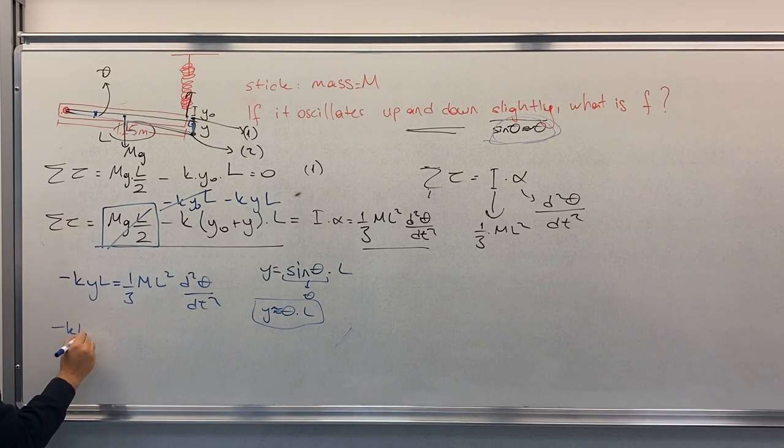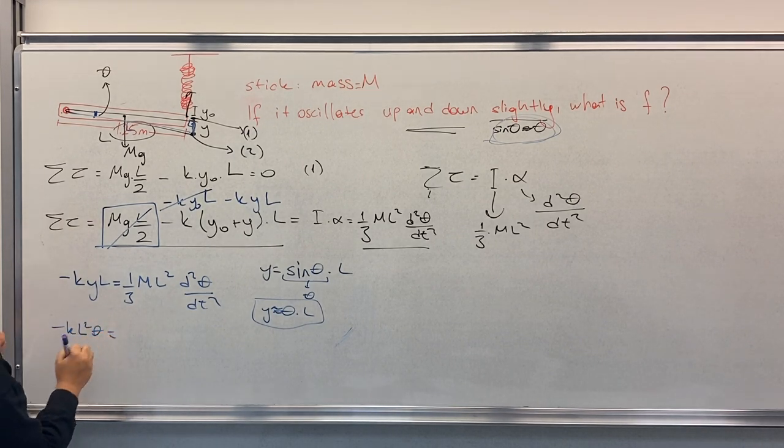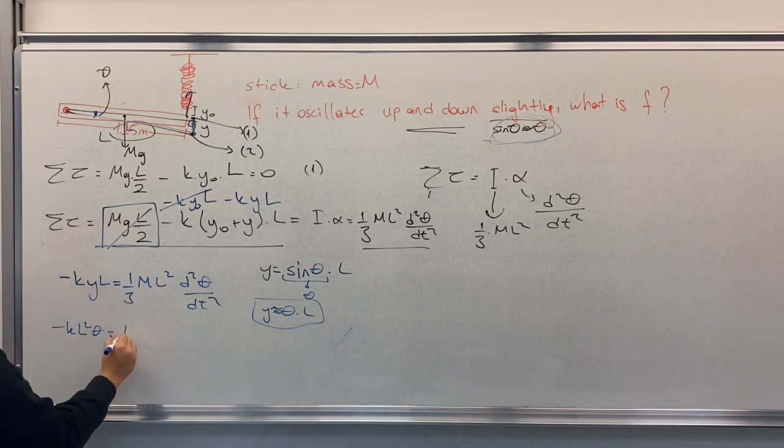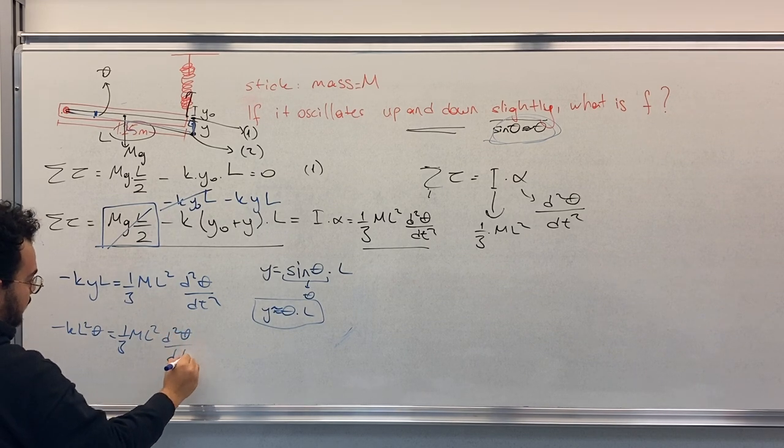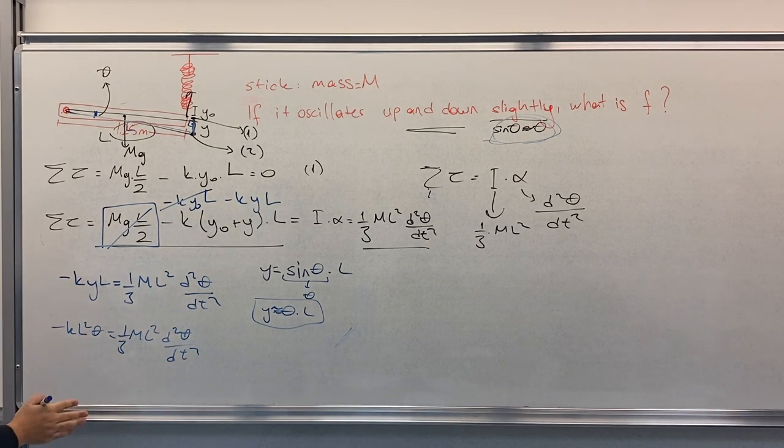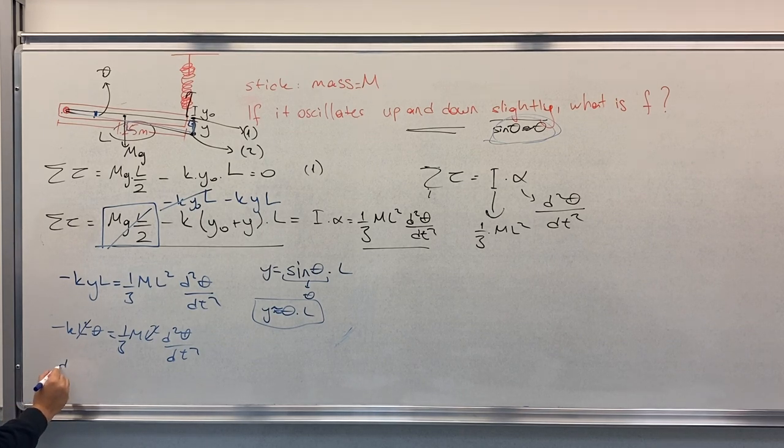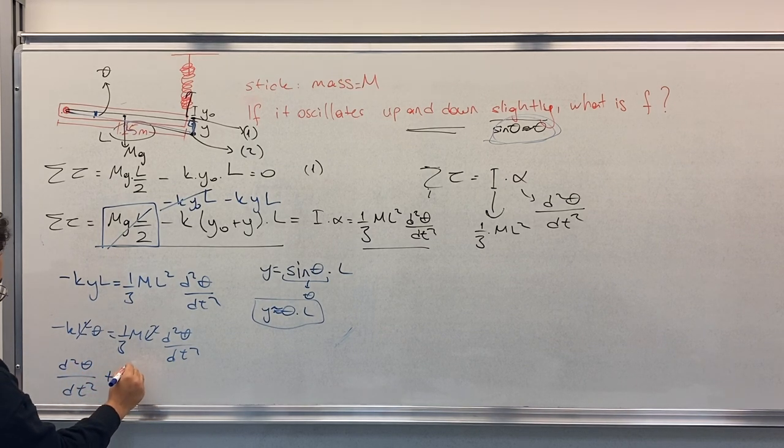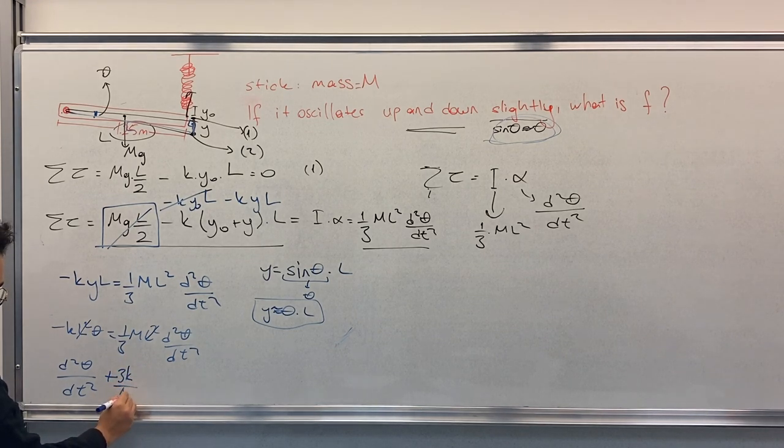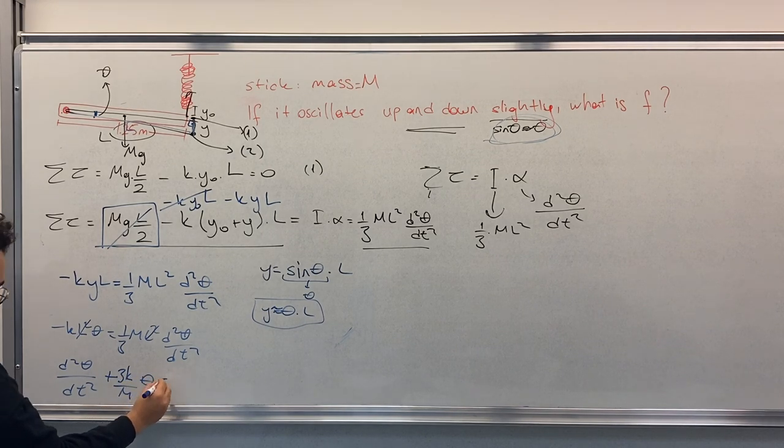So we can write this here: minus K L squared theta equals to 1 over 3 M L squared d squared theta d t squared. Let's arrange this properly, let's cancel out. So we get d squared theta d t squared plus 3k over M theta equals to zero.